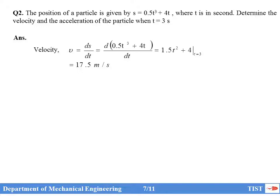If the displacement expression in terms of t is given, take the first derivative to get velocity, and the second derivative to get acceleration. For acceleration: a = dv/dt. We already have v = 1.5t² + 4, so differentiating gives a = 3t. Substituting t = 3: a = 9 m/s². It is a very simple question.